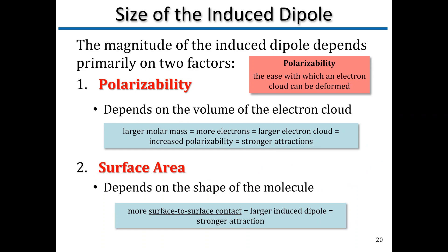The size of the induced dipole depends on two factors. The first is polarizability — the ease with which an electron cloud can be deformed, or how easily can we make it have a positive end and a negative end. A larger molar mass means more electrons, which means a larger electron cloud, which means increased polarizability and stronger interactions. Bigger molar mass, more electrons, stronger attraction. The second factor is surface area — if we have more surface-to-surface contact, the larger the dipole is. Larger molar mass means stronger attractions because the electron cloud is bigger, so there are more electrons to manipulate.